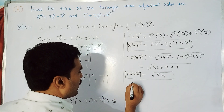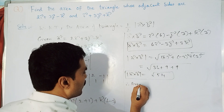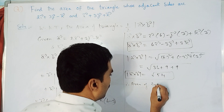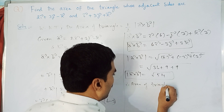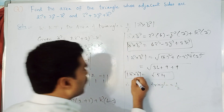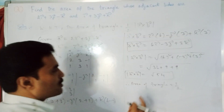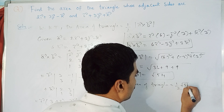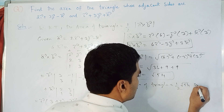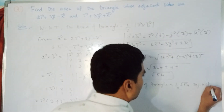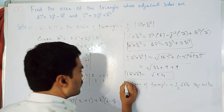Therefore, area of triangle = half × |a × b| = half × √54. Since it is area, it is represented in square units.